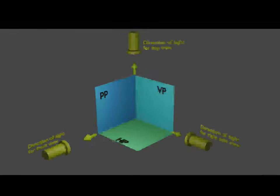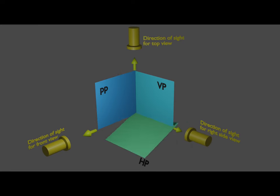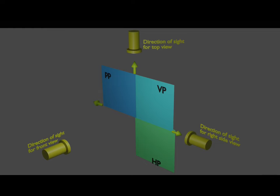Now considering the case of the right side view, taking the first octant and concentrating on the rotation of planes — the rotation is such that it opens up the space. Now you can see that we have the front view on the vertical plane, the top view on the horizontal plane, and the right side view on the profile plane. Each view is at a different place and there is no overlapping of the views. As we saw with the left side view, here also we get the right side view on the left side of the front view.